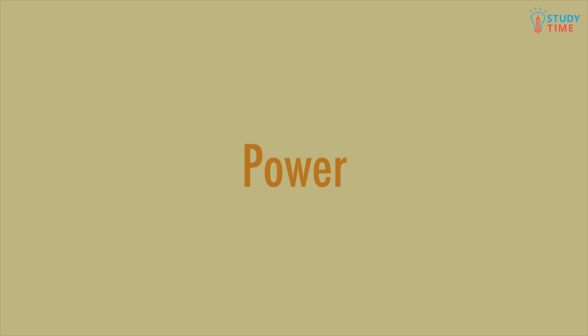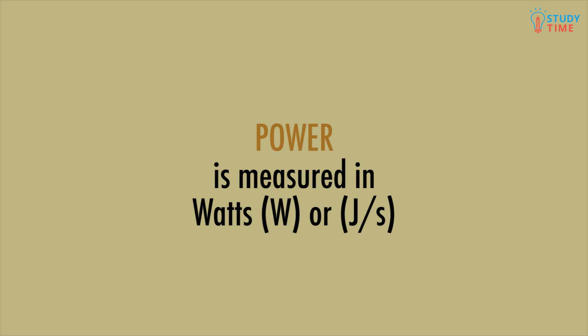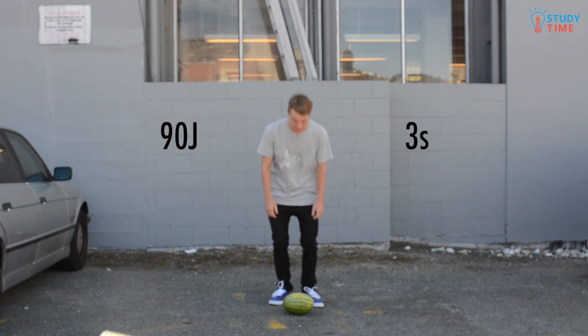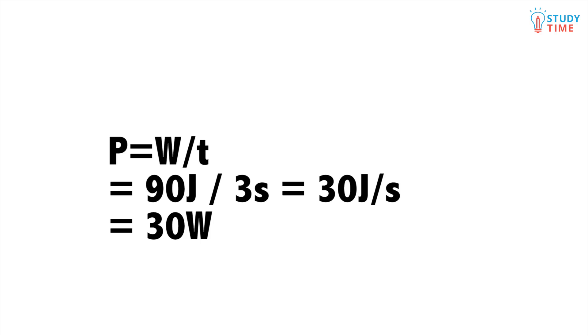The rate of work over time is called power. The equation for power is P equals W over T, which reads power is equal to the amount of work done divided by the time taken to do it. Power is measured in watts, which is the same as joules per second. So let's say James took three seconds to lift the watermelon. The power would be P equals W over T equals 90 joules divided by 3 seconds equals 30 joules per second, or 30 watts.